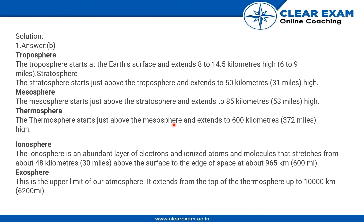The exosphere is the upper limit of our atmosphere. It extends from the top of the thermosphere up to 10,000 km, that is 6,200 miles. This is a brief description of all the regions in the atmosphere.